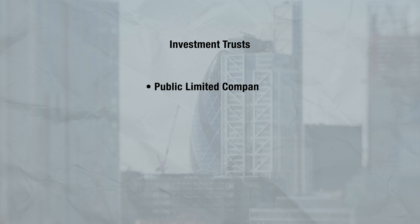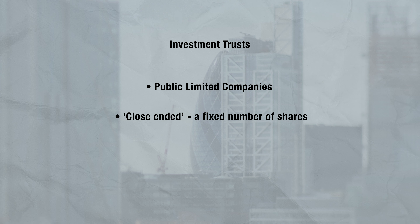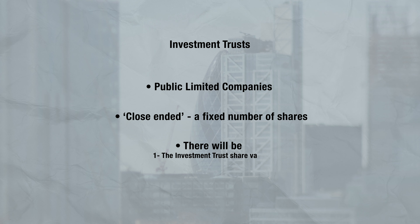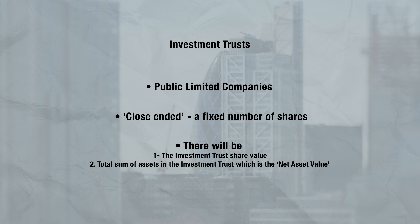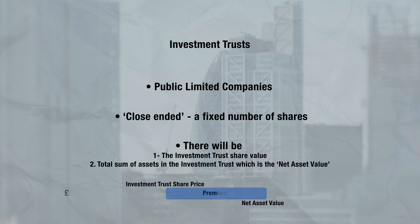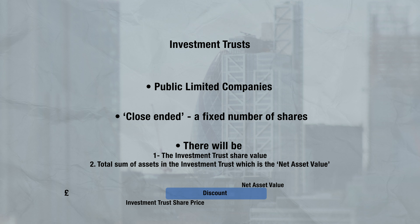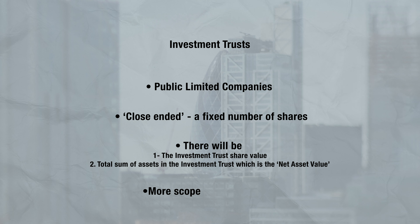Investment trusts are public limited companies and close-ended funds, which can sometimes — but not always — make them a popular choice for less liquid assets, such as smaller companies or certain markets. The reason for this is the manager will have a bit more control of the flow of the assets because they're close-ended — they don't have to expand and contract as much as their open-ended counterparts do. The total sum of investment trust assets is called the Net Asset Value, or NAV. Investment trusts can commonly trade higher than the NAV — which is a premium — or lower, which is called a discount — and this tends to relate to how well the investment trust is regarded, or market sentiment. There's also scope for investment trusts to borrow or gear slightly more, which can be a good or bad thing depending on your view.